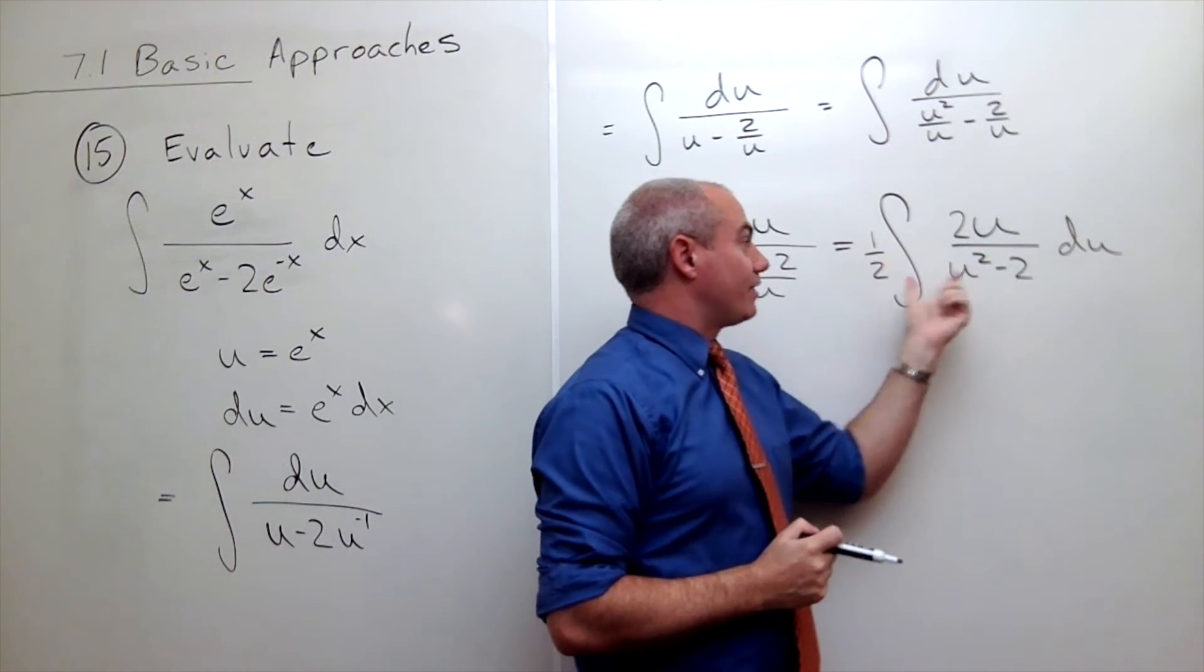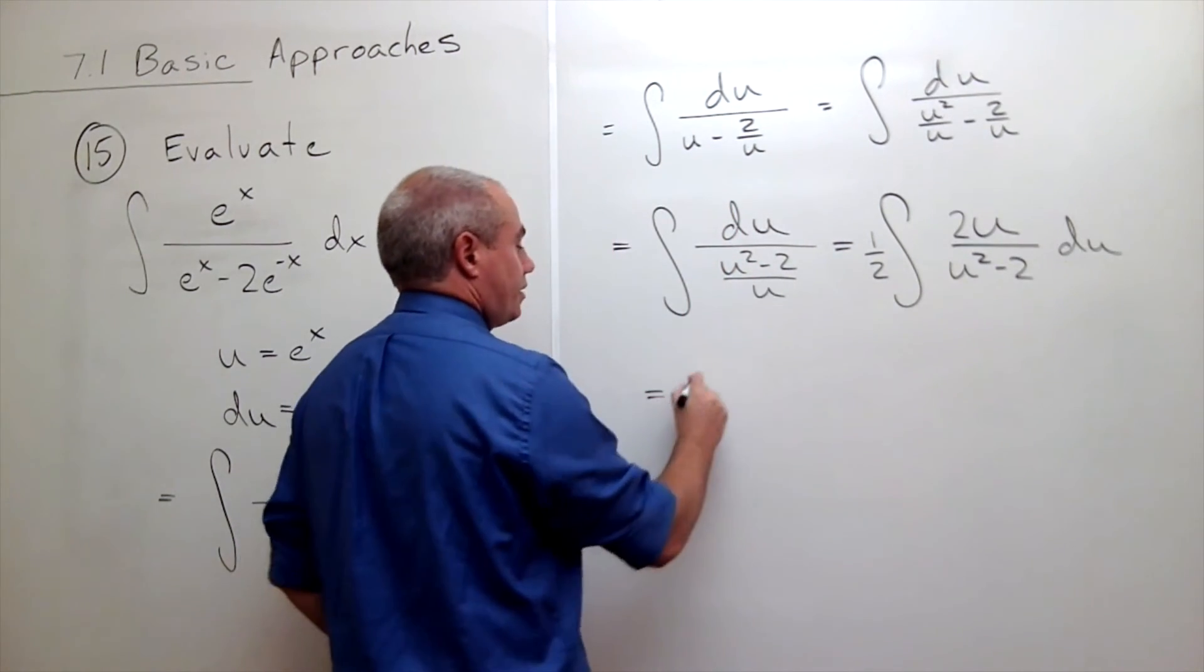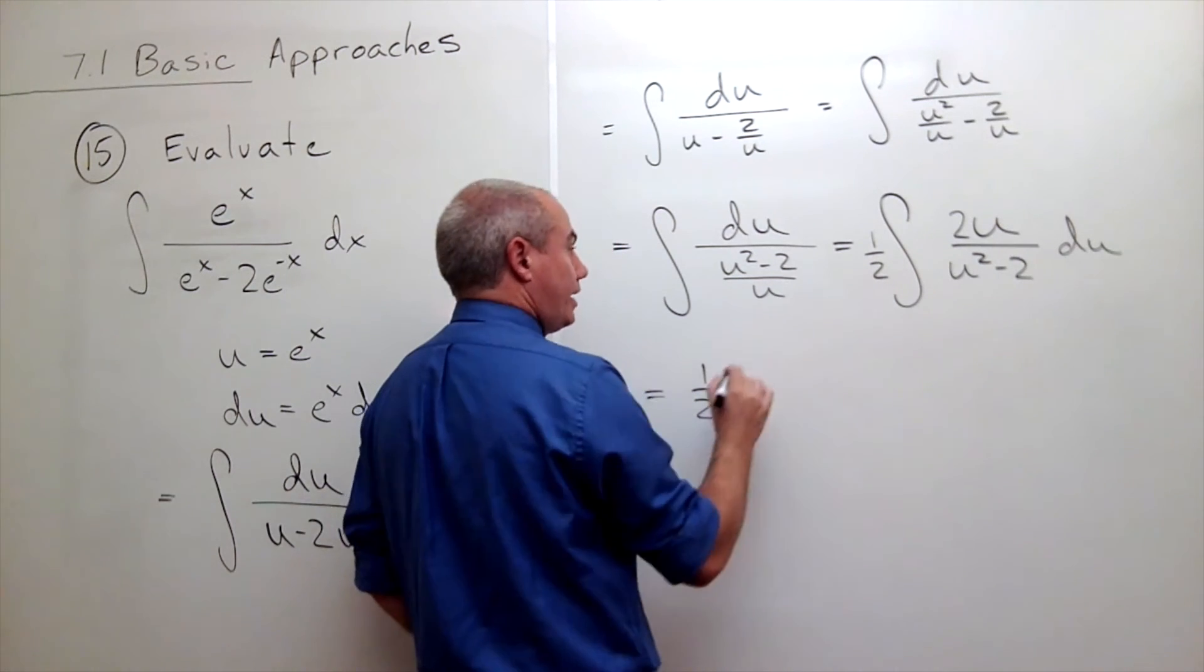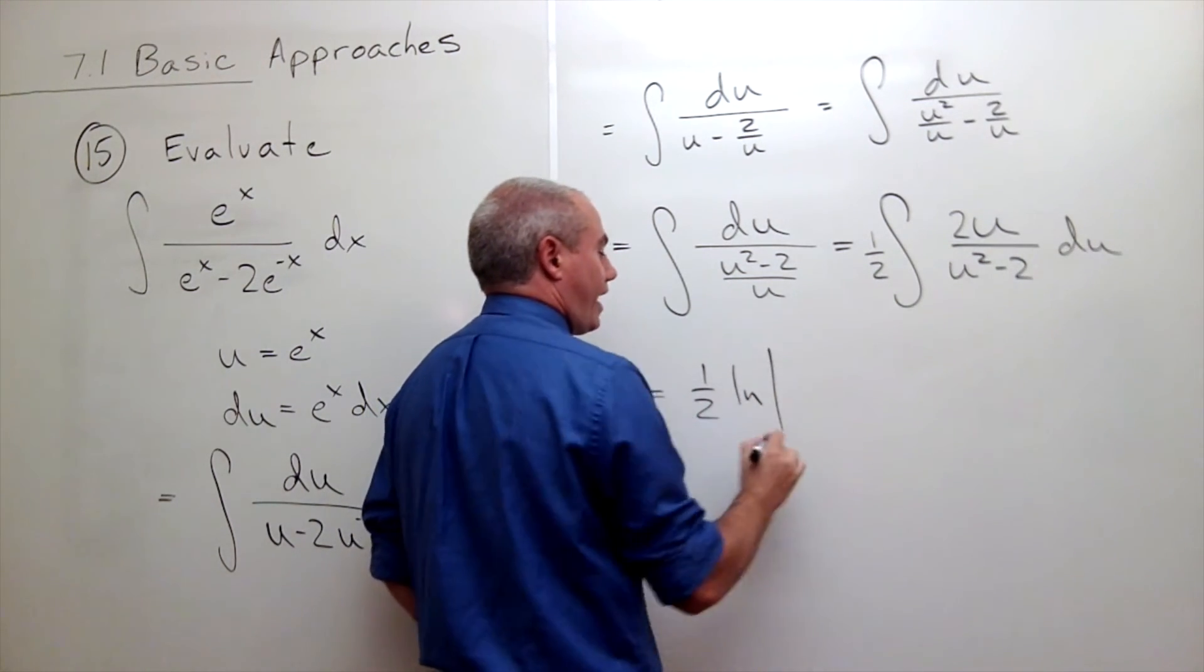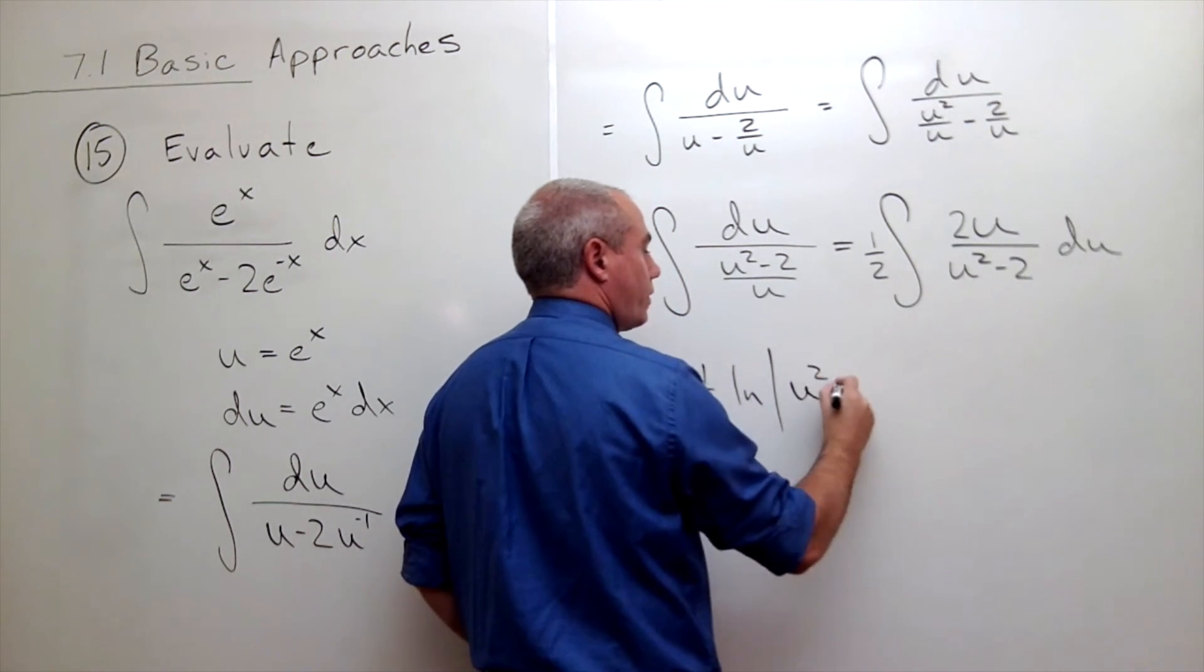So let's write that in. I still have this one half, but now I get ln of the absolute value of what was on the bottom, which is u squared minus 2, and then I have a plus C. Now I need to plug back in for u.